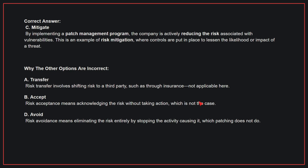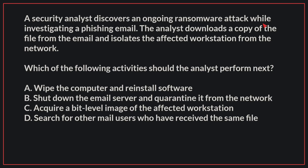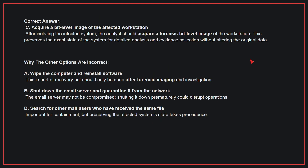Therefore, the correct answer is C. A security analyst discovers an ongoing ransomware attack while investigating a phishing email. The analyst downloads a copy of the file from the email and isolates the affected workstation from the network. Which of the following activities should the analyst perform next? The correct answer is C. Acquire a bit-level image of the affected workstation. After isolating the infected system, the analyst should acquire a forensic bit-level image of the workstation. This preserves the exact state of the system for detailed analysis and evidence collection without altering the original data.